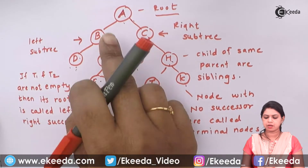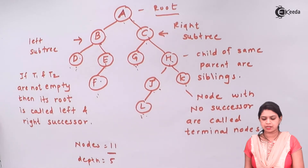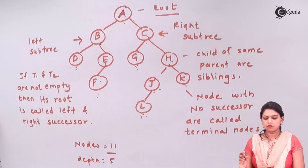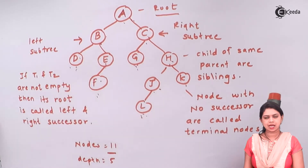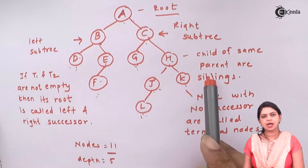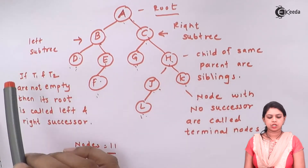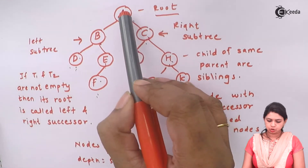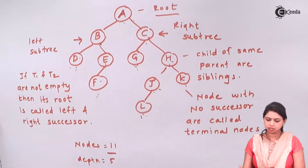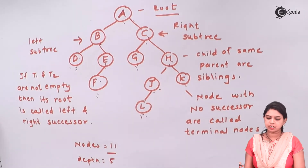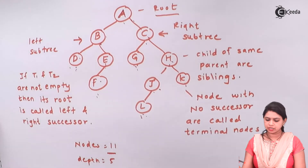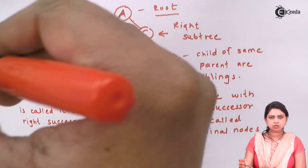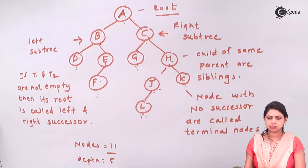In this binary tree, A is called the root, while B and C are called the left subtree and right subtree. So the binary tree is classified into the root and the remaining nodes, which form an ordered pair of disjoint binary trees T1 and T2. Here A is the root, B is T1, and C is T2.